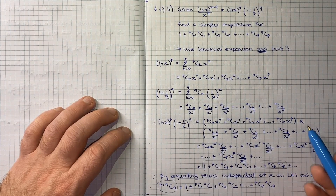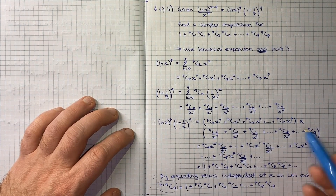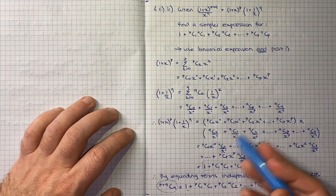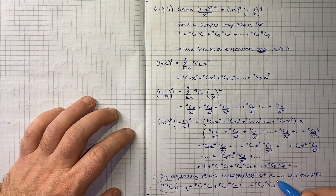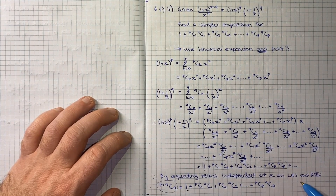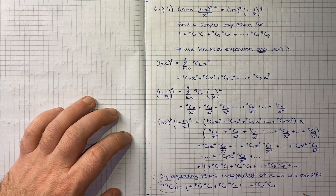So yeah, there you have it for that question. It's really just a repetition of the techniques from part 1, doing the expansion twice on each component, being careful to focus only on terms where the x's cancel, and then equating left and right-hand sides.